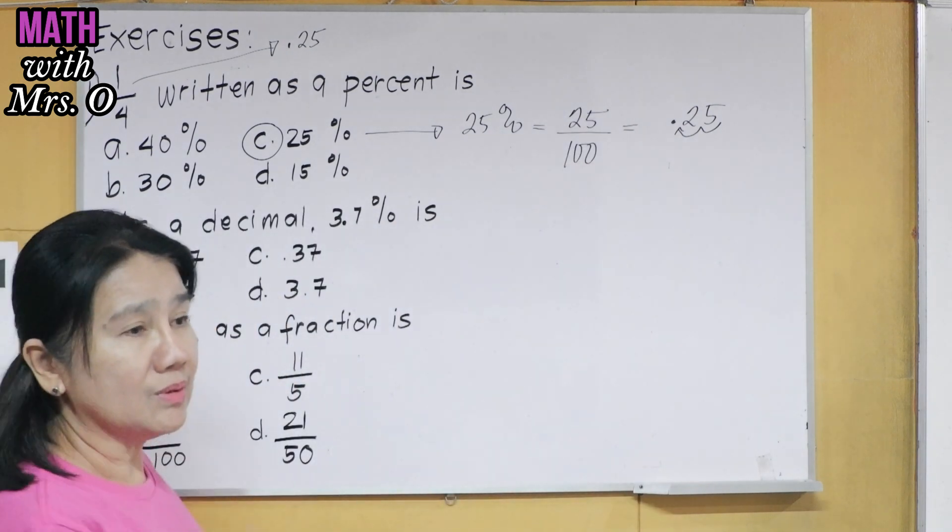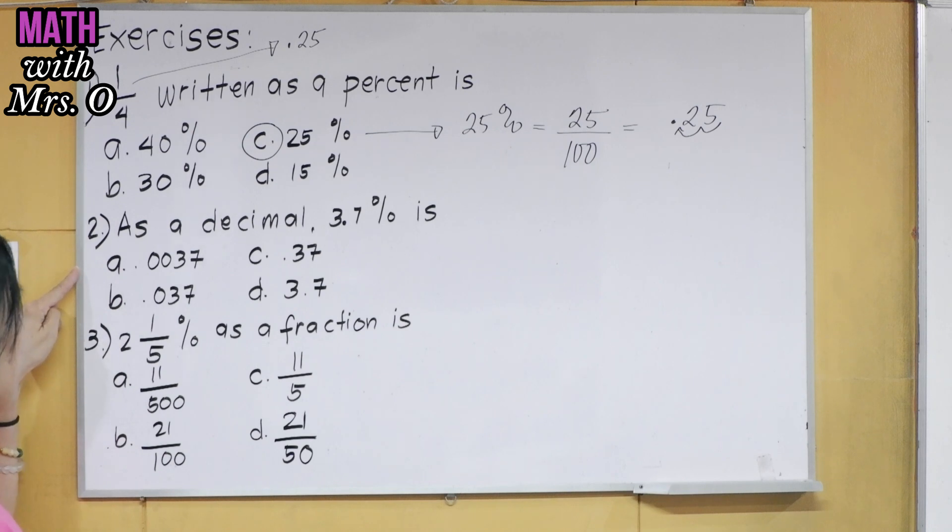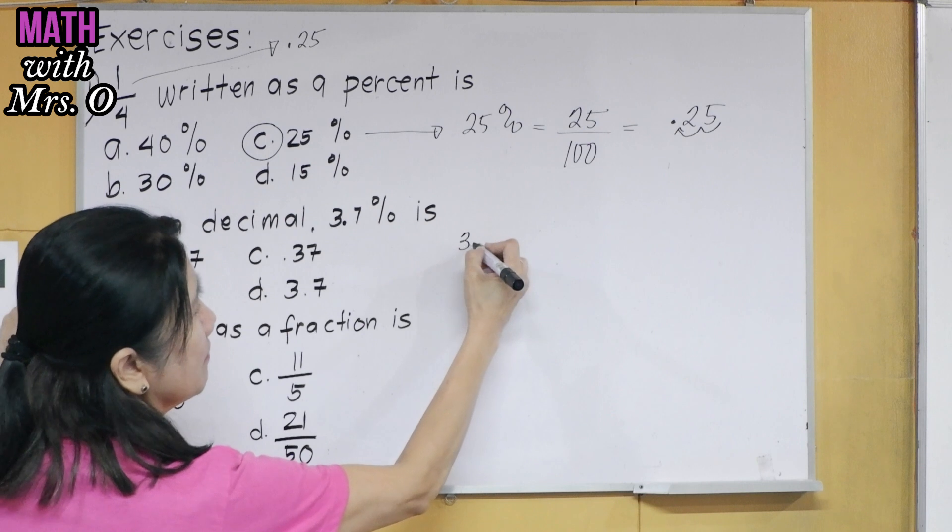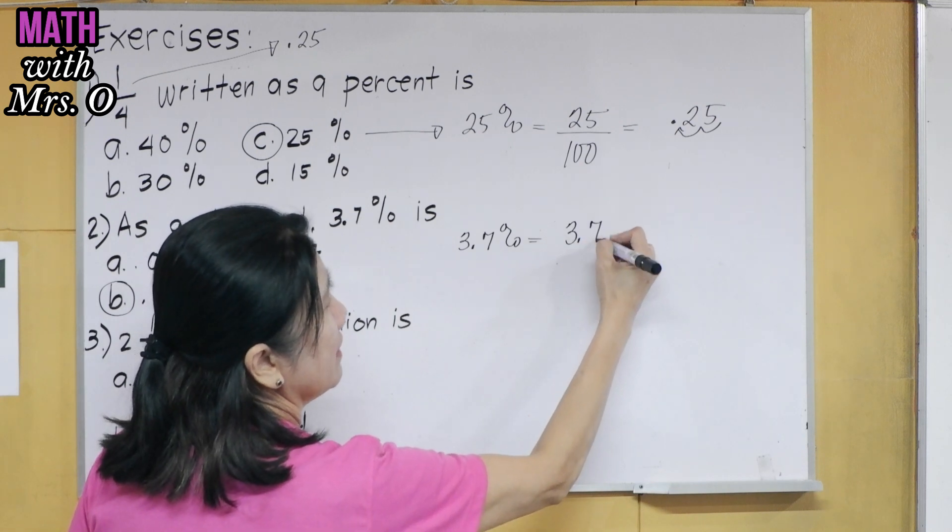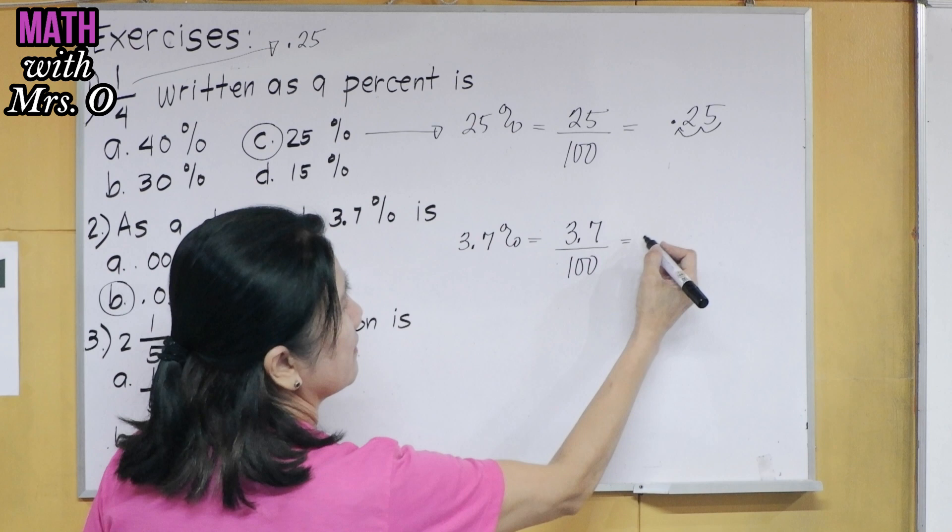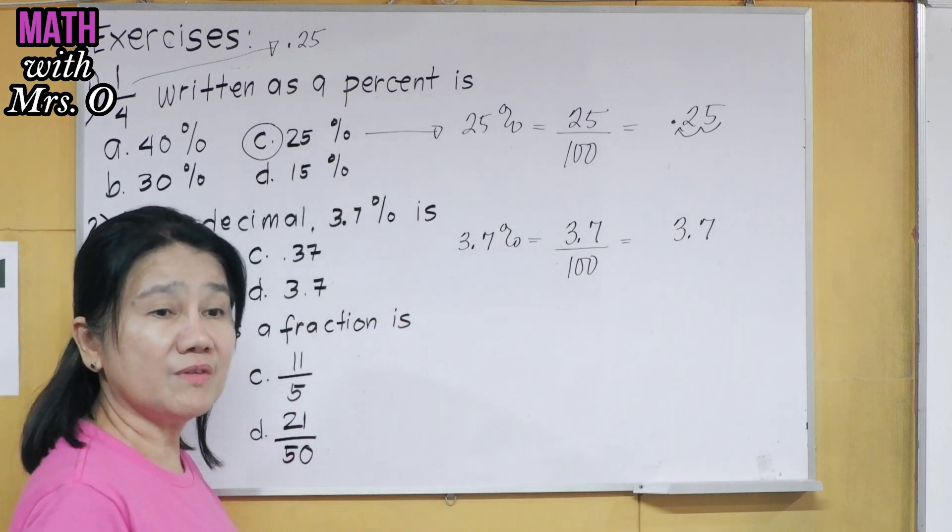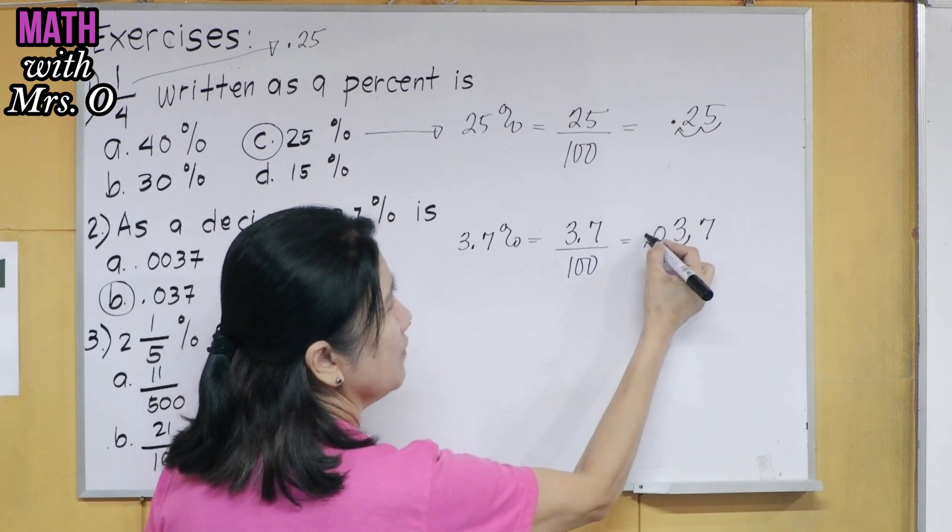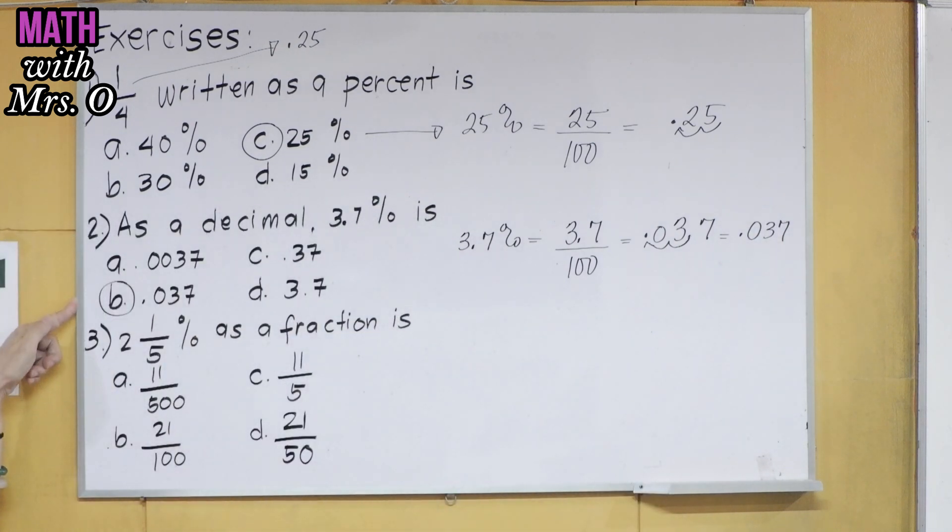Problem number 2. What is your answer in problem number 2? 0.037. So what letter is that? B. Wow. Is B correct? 3.7% means 3.7/100. And that would mean 3.7, you copy 3.7 and move the decimal point two places to the left, which will give you 0.037. So the answer is letter B.